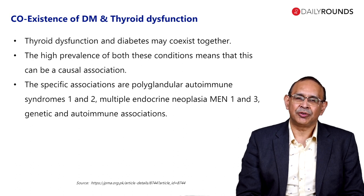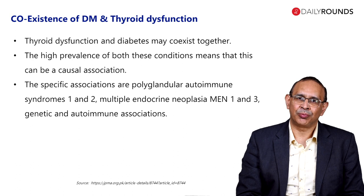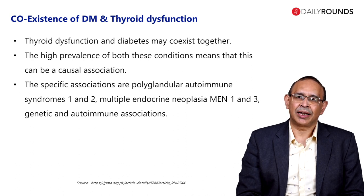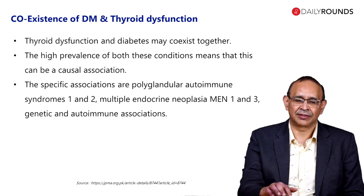There may be times when thyroid dysfunction and dysglycemia coexist as part of a polyglandular pathology. This polyglandular pathology can be autoimmune or it can be neoplastic. The examples we mentioned earlier — polyglandular autoimmune syndromes, multiple endocrine neoplasia, and other genetic syndromes — all these hold true for Thyrovigilance.